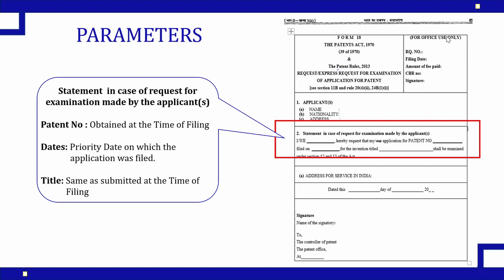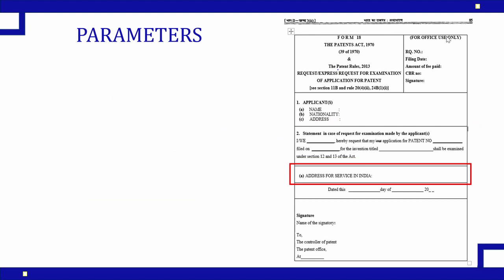The next field is 'Filed on' — here the priority date or the filing date of the application needs to be mentioned. Next is the title of the invention — the same title which was submitted at the time of application in Form 1 needs to be mentioned here without any change. Under Section 12 and 13 of the Act, you need to fill these details carefully. The data should be the same as mentioned in Form 1 and 2, and the patent application number received from the registry should be correctly stated.